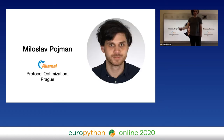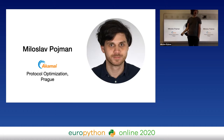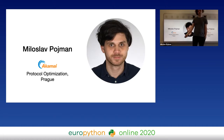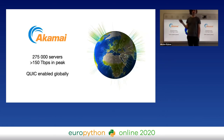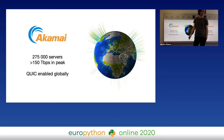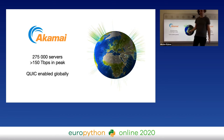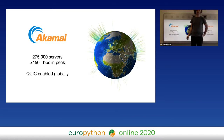I'm Miroslav Pojman and I'm streaming from Prague. I work here for Akamai Technologies in the protocol optimization team. Akamai runs one of the largest CDNs in the world with more than a quarter million servers around the globe, and our peak traffic is more than 150 terabits per second.